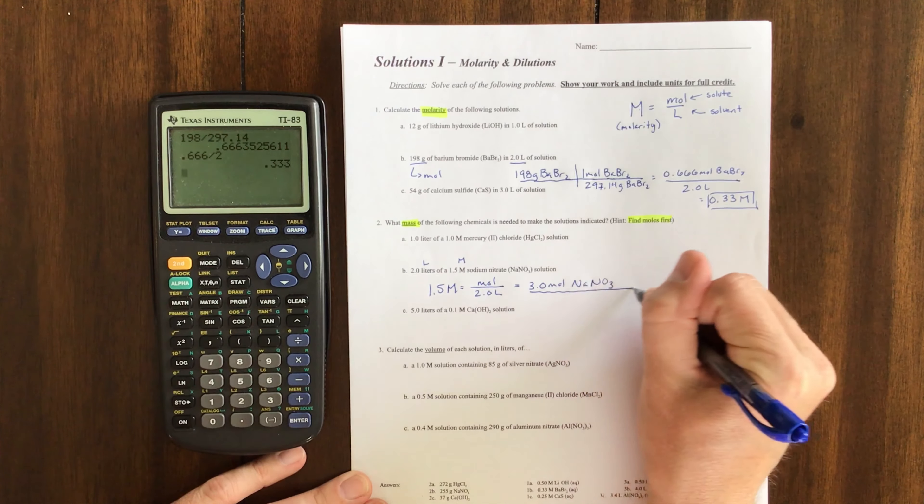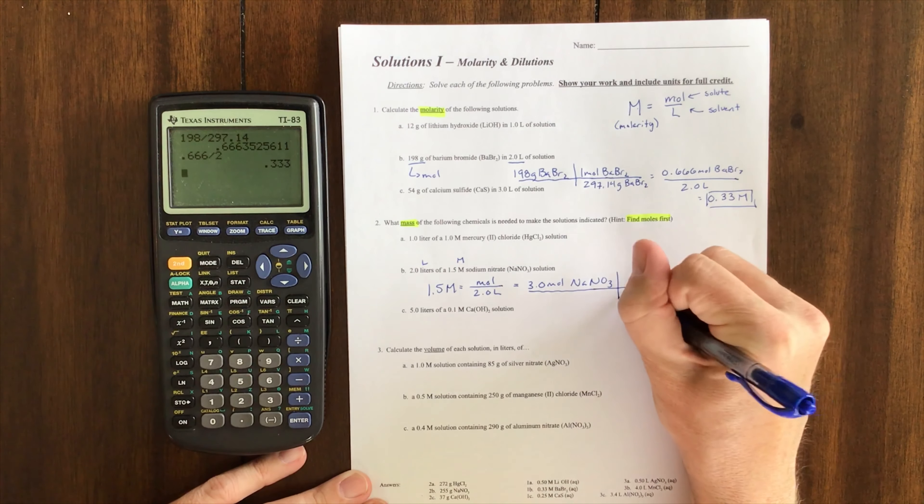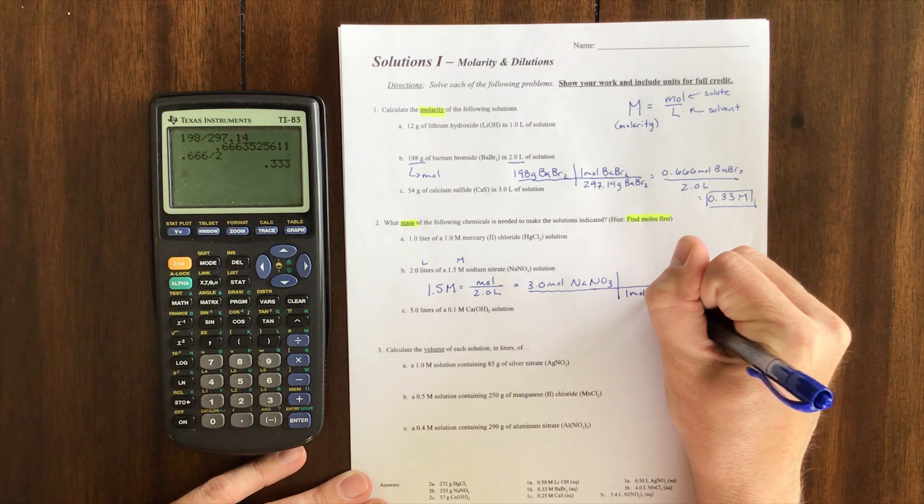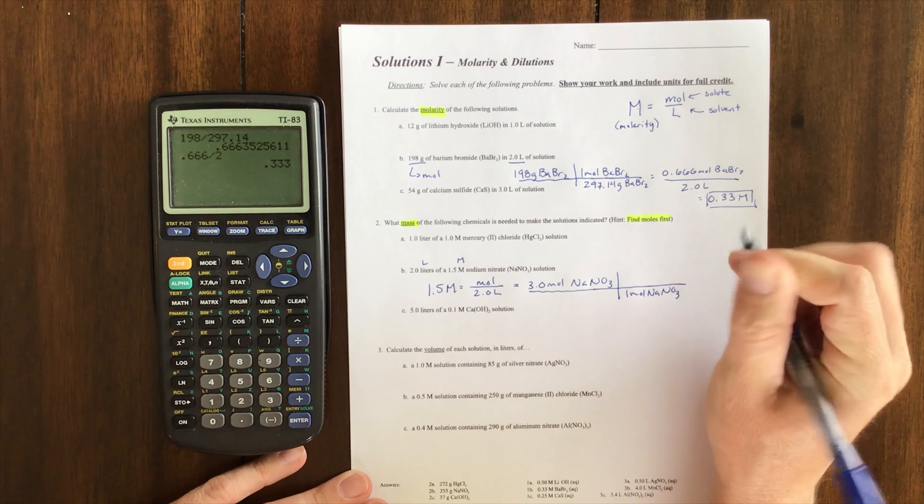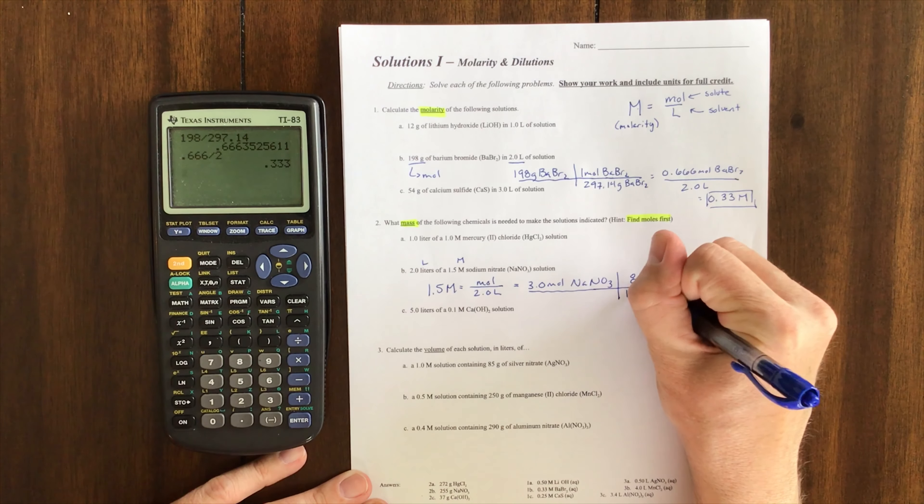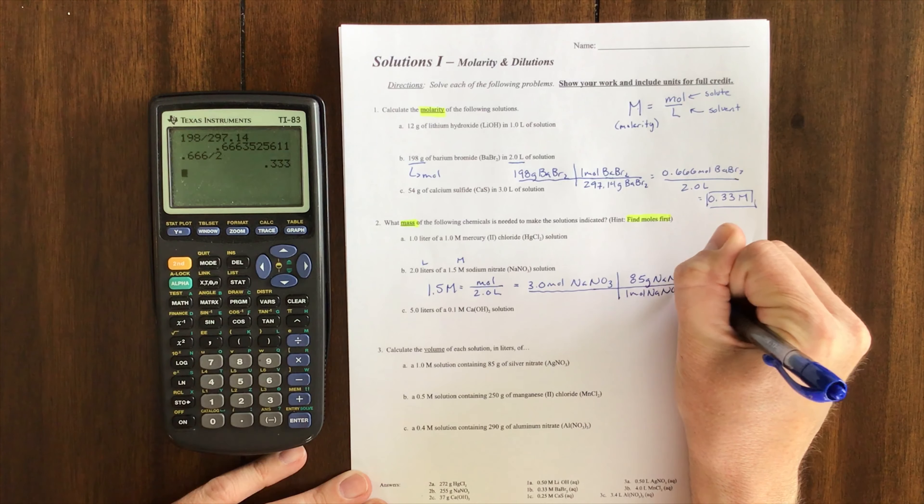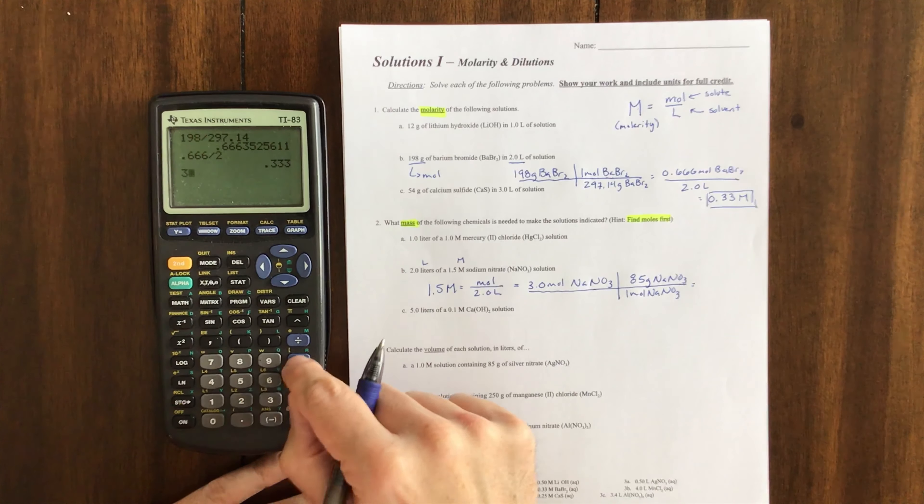How can I get from moles to grams? By doing a conversion. The mass of that is approximately 85, and then I multiply that.